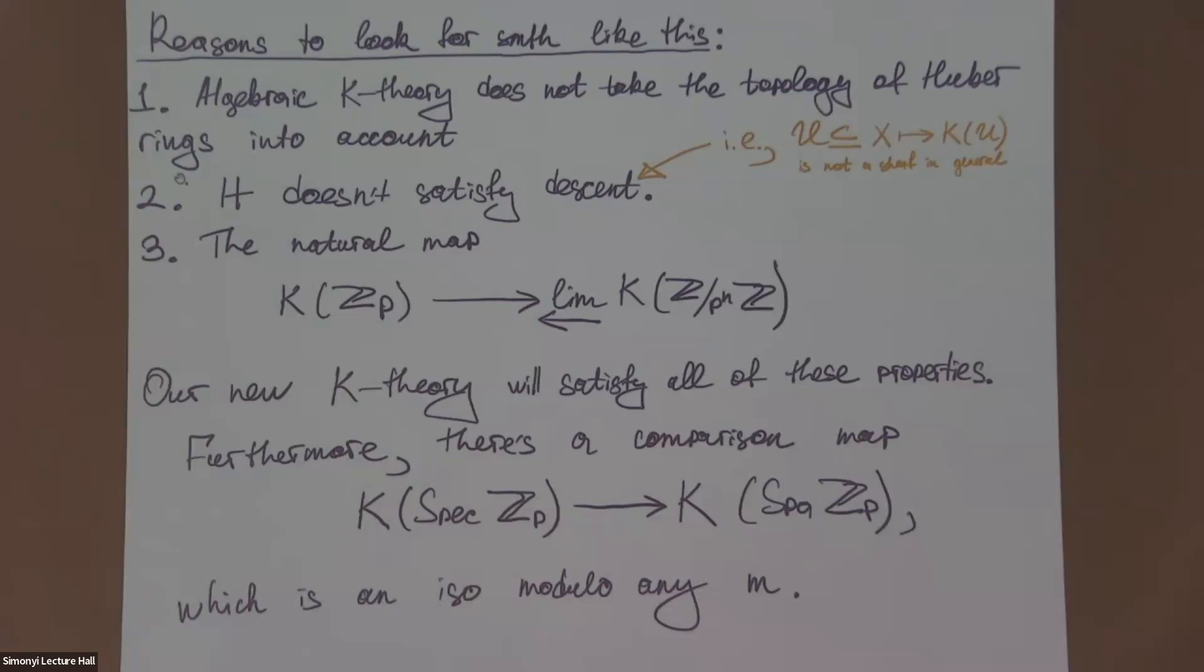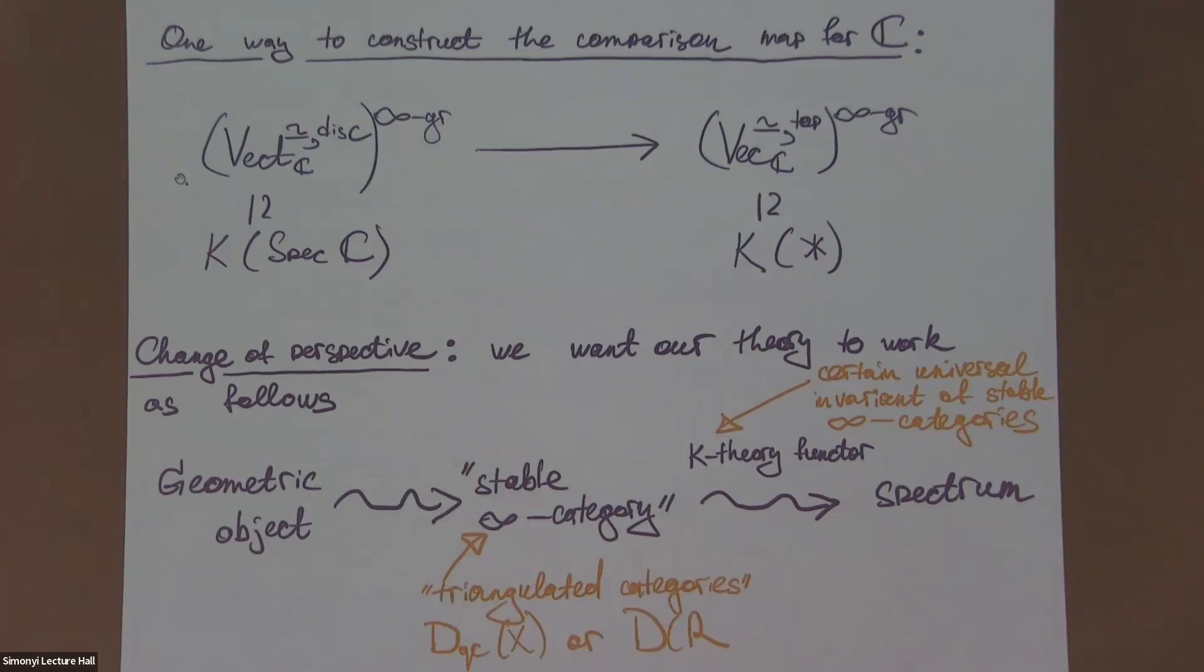There is a third question, which is maybe not related to the first two, but still a reasonable question of some sort of continuity. You can consider this natural map. You take the algebraic K-theory of ℤ_p and map it to this inverse limit. This map is not an isomorphism. Our new K-theory will solve all these problems and satisfy all these properties.